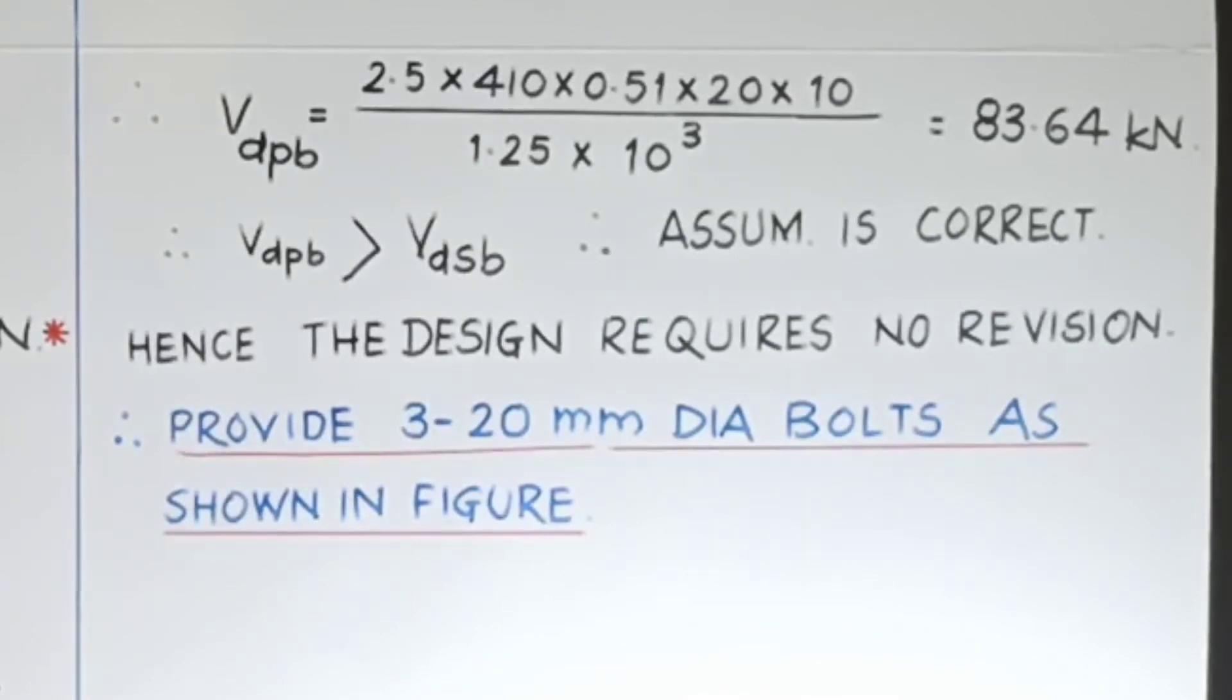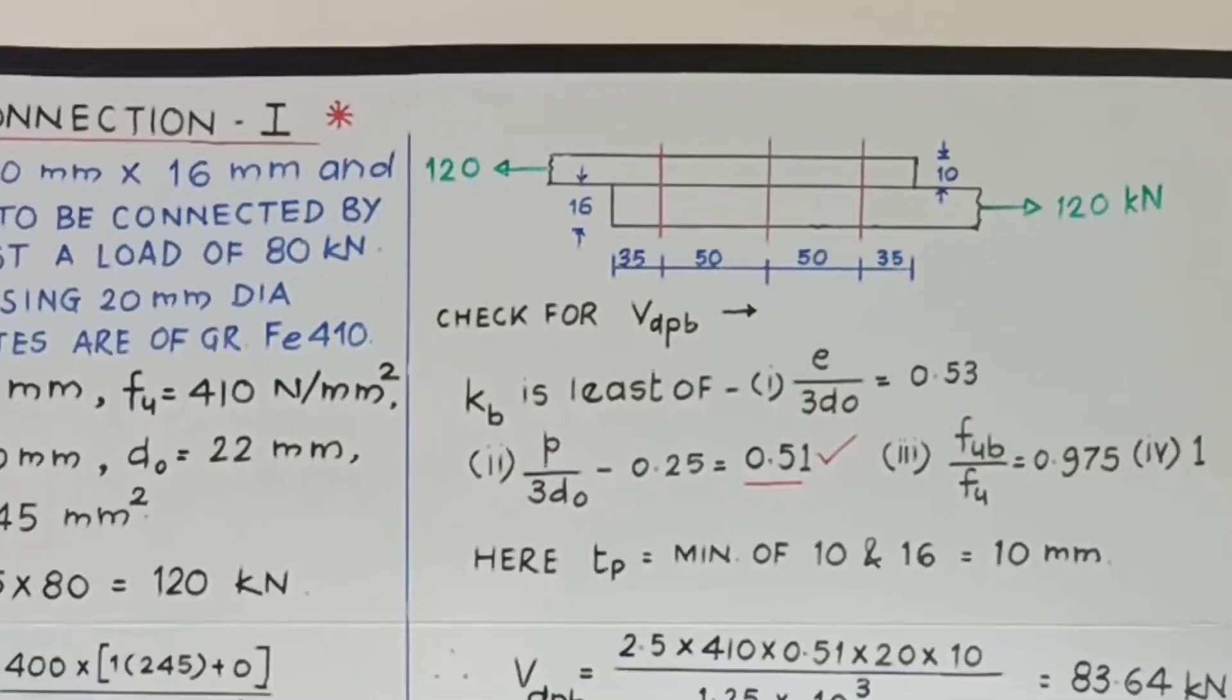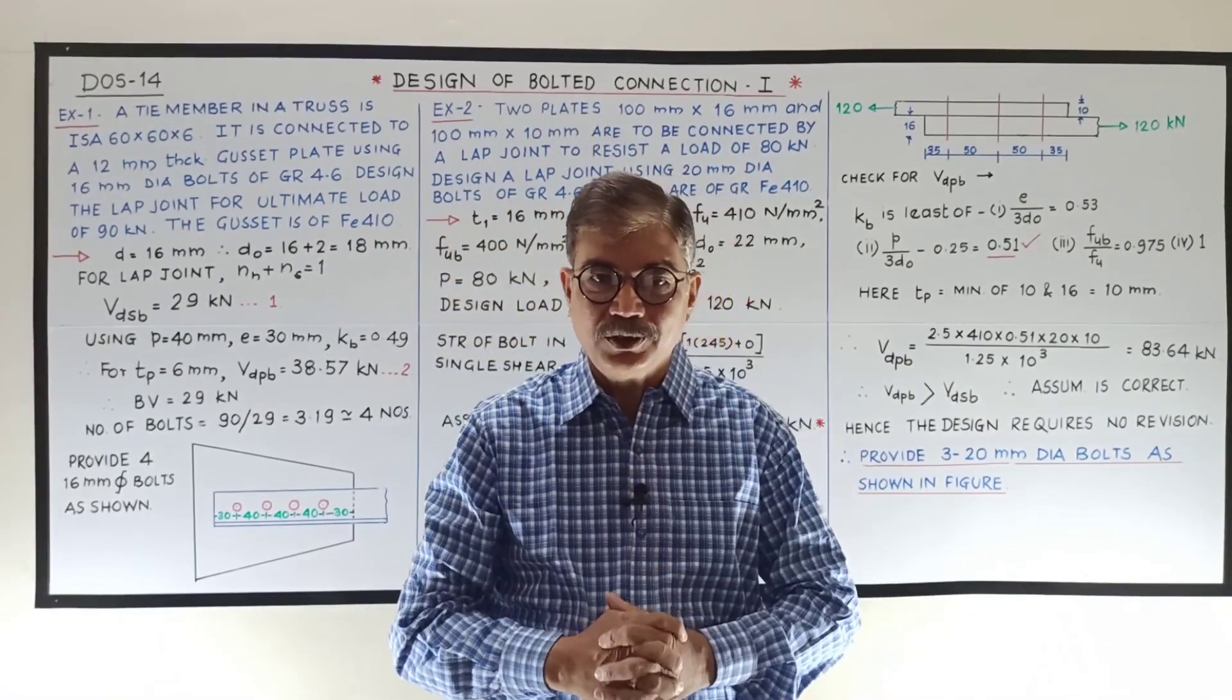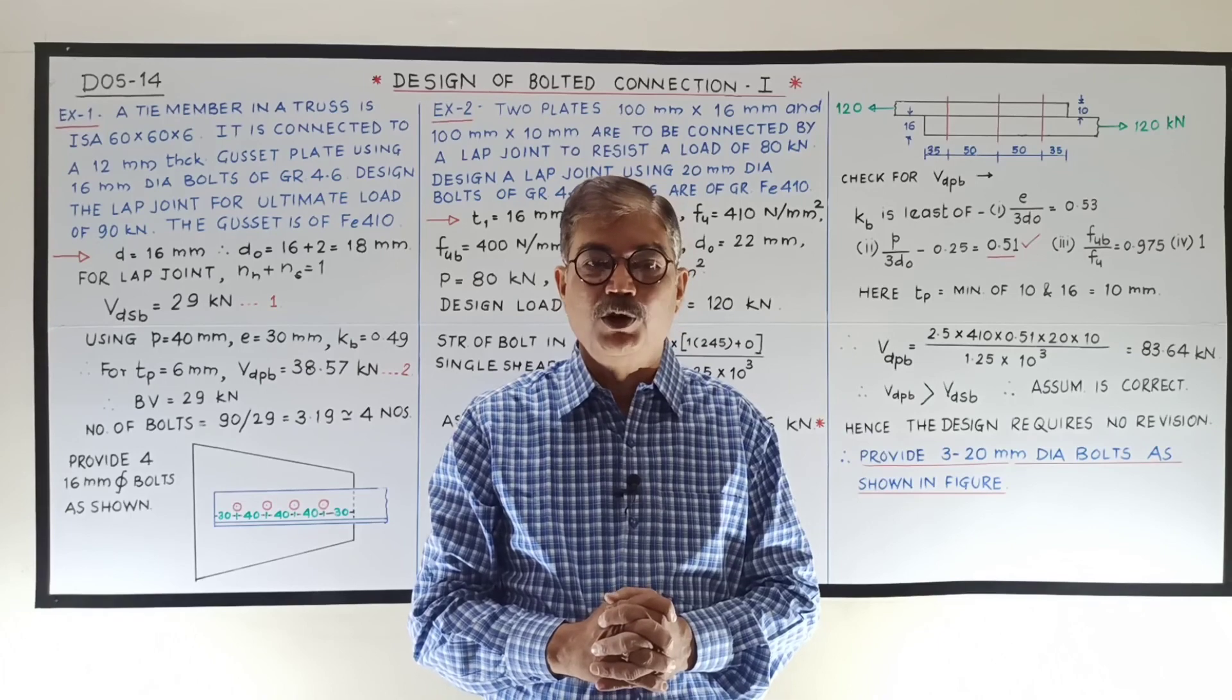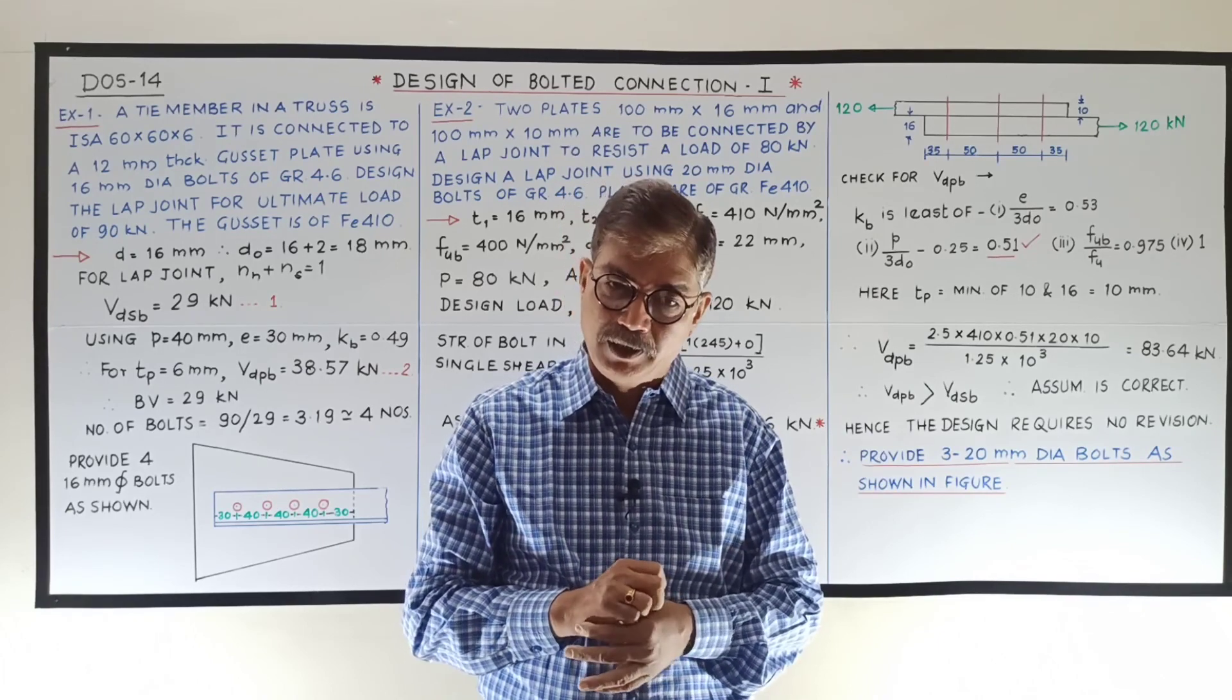Write down the concluding statement, provide three 20 mm diameter bolts as shown in the figure. Figure is important. So, with these two problems, we saw how to design the lap joint.